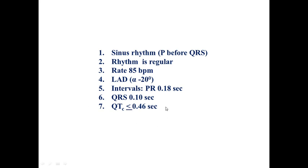As a result, our ECG interpretation: rhythm is sinus because P wave is present before QRS; rhythm is regular; rate is 85 beats per minute; left axis deviation, alpha angle minus 20 degrees; PR interval 0.18 seconds; QRS 0.1 seconds; and corrected QT 0.46.